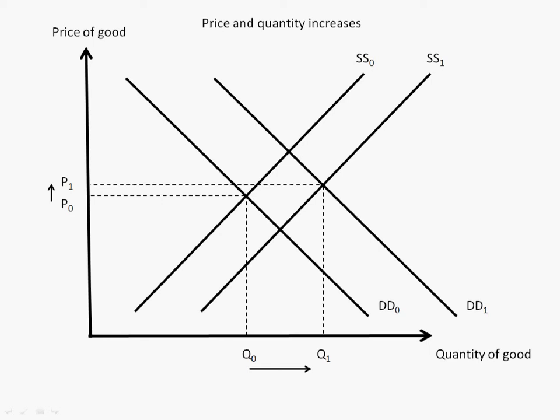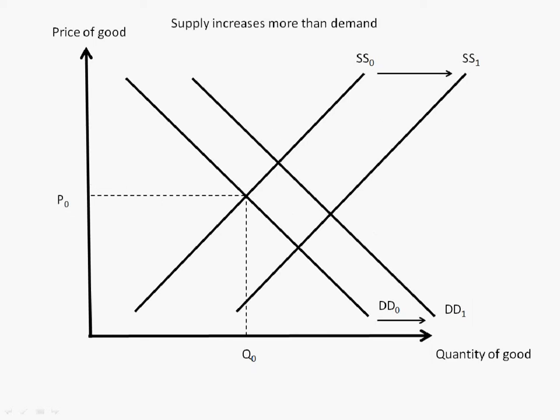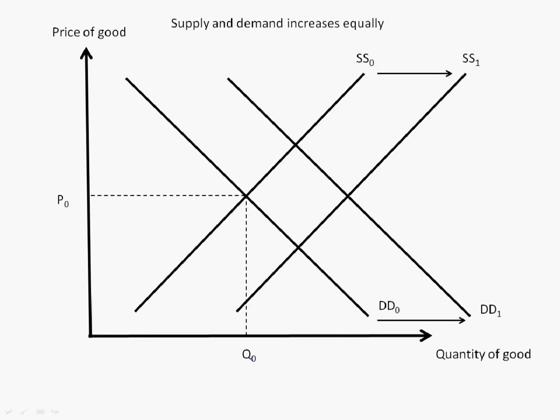However, when the demand curve shifts to a smaller extent than the supply curve, the price of goods will decrease from P0 to P1 and the quantity of goods will increase from Q0 to Q1. On the other hand, when both the supply curve and demand curve shift to the same extent, the price of goods will remain the same.